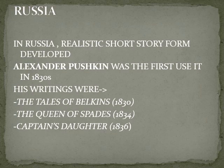In Russia, a realistic short story form developed. Alexander Pushkin was the first to use it in the 1830s. His writings include Tales of Belkin, 1830; The Queen of Spades, 1834; and Captain's Daughter, 1836. These are the important works of Alexander Pushkin in Russia.